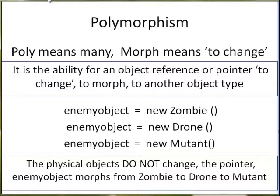Poly means many. Let's have enemy object the variable morph again, so that it now accesses a mutant object. To be clear, we are looking at three separate objects, but only one variable enemy object, and it is the variable that is morphing.